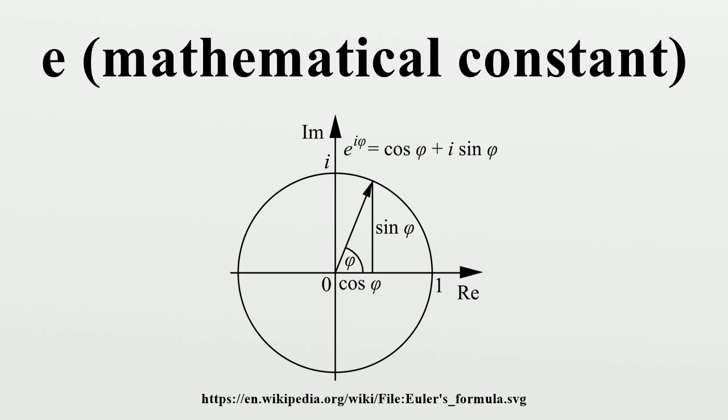It is conjectured that e is normal, meaning that when e is expressed in any base, the possible digits in that base are uniformly distributed.